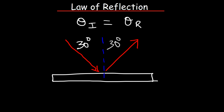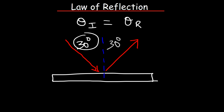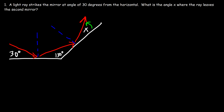That's the law of reflection. Keep in mind these two angles are complementary — the normal line always forms a right angle with the surface. So if the angle of incidence is 30°, this angle here is 60° and this angle here is also 60°.